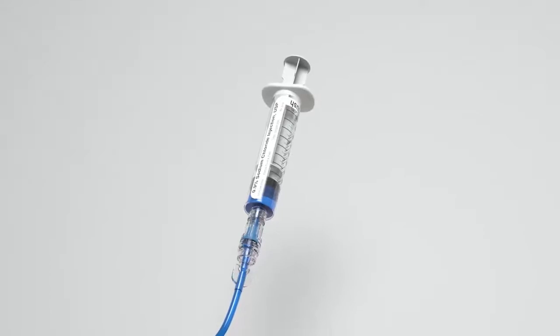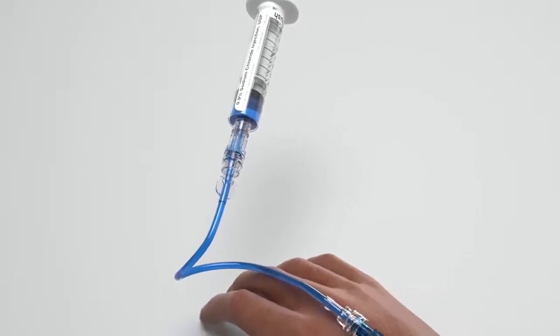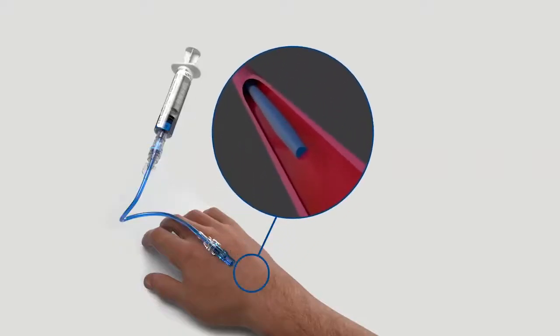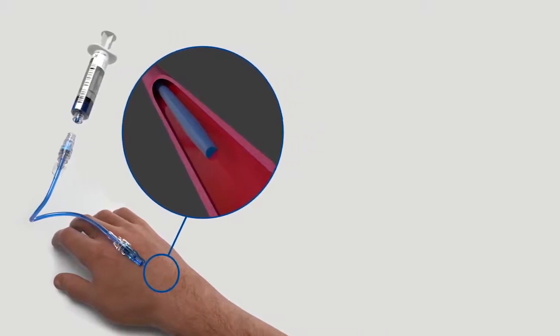The clamping sequence when disconnecting from the connector is determined by a needle-free connector's displacement type. A positive displacement or neutral clamping sequence needle-free connector proactively clears the catheter tip via anti-reflux technology. It does not reflux blood into the catheter regardless of clamping sequence.